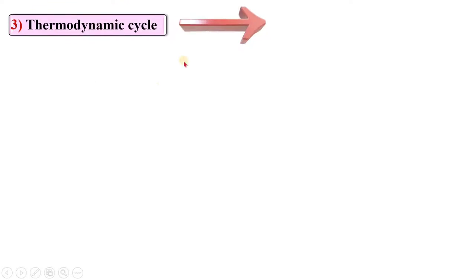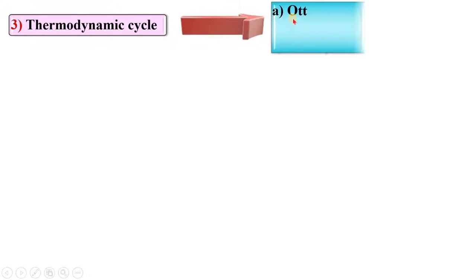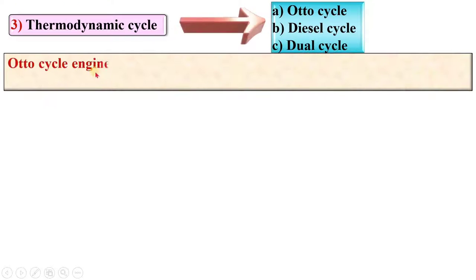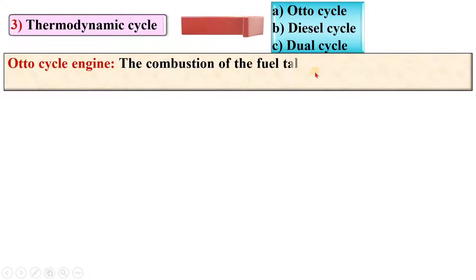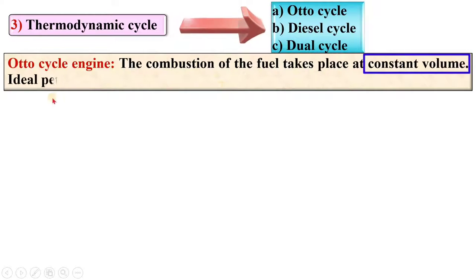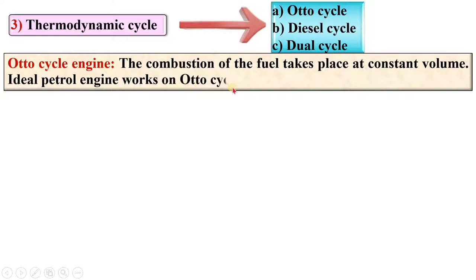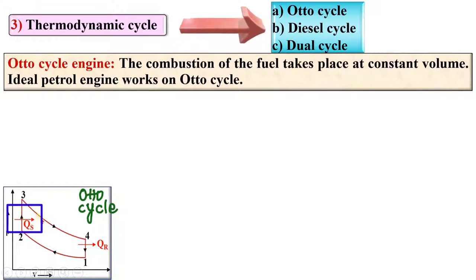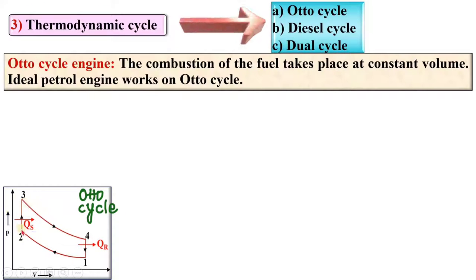According to the thermodynamic cycle, IC engines are classified as Otto cycle, diesel cycle, and dual cycle. In the Otto cycle, the combustion of the fuel takes place at constant volume. Ideal petrol engines work on the Otto cycle. Here you can see the ideal Otto cycle on a PV diagram, where the combustion of fuel takes place at a constant volume process.